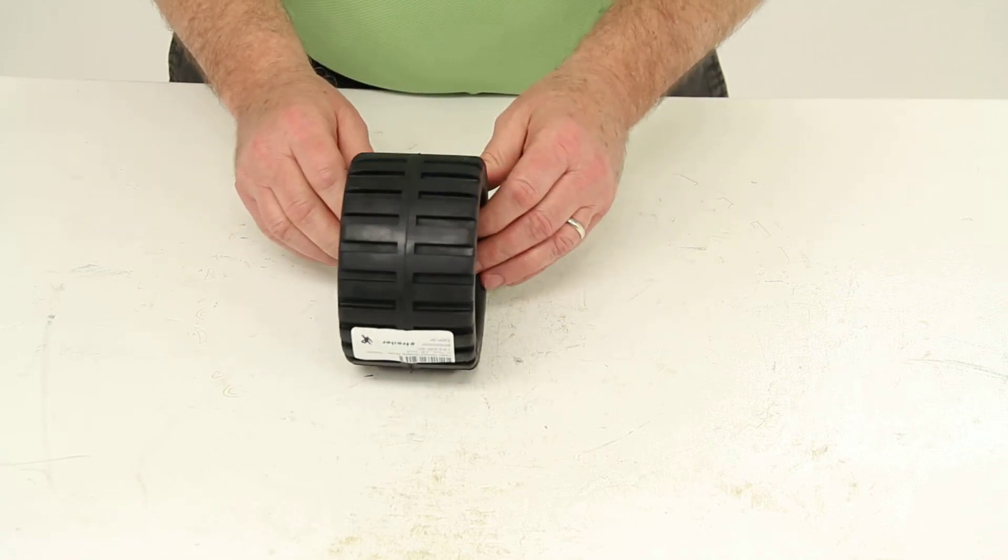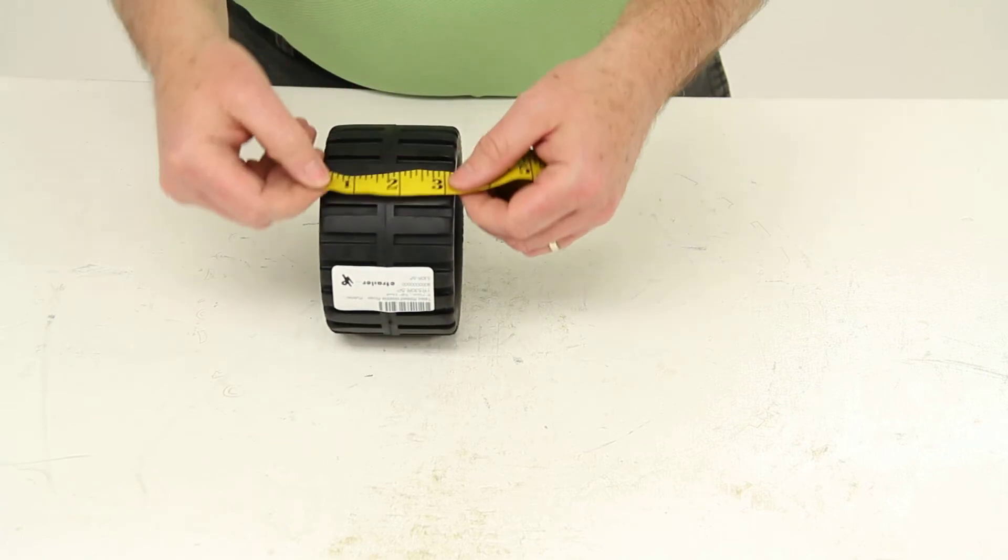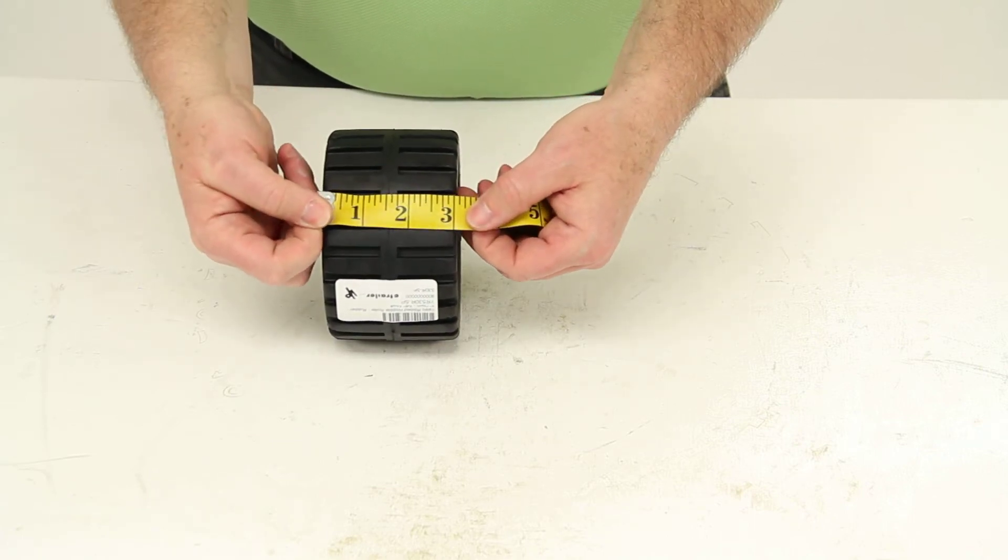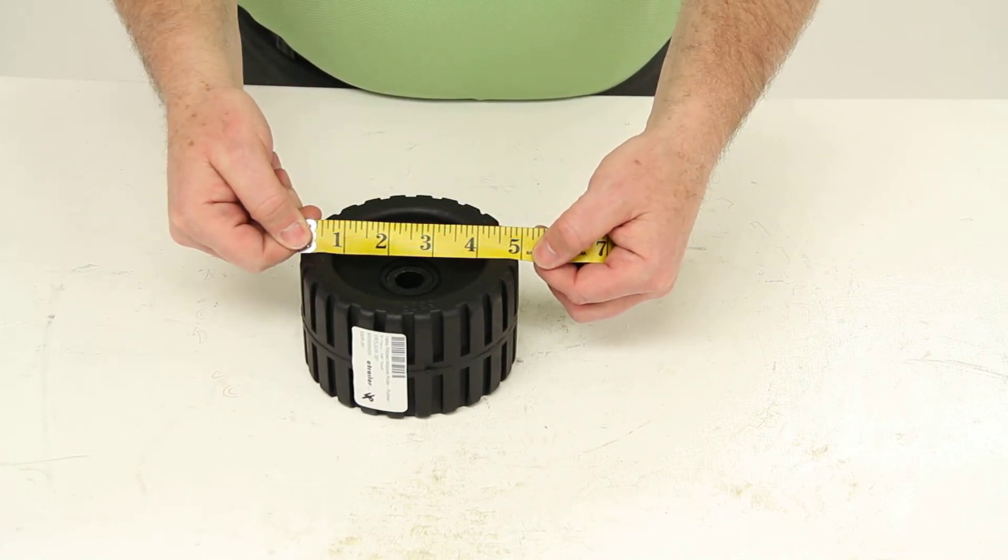This roller is made in the USA and we'll do a few dimensions on it. The width again is three inches wide. The diameter is five inches in diameter.